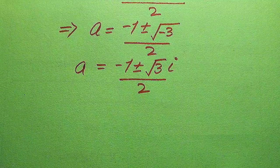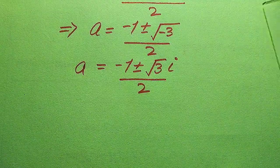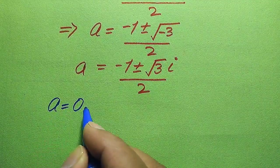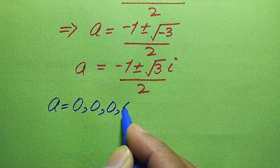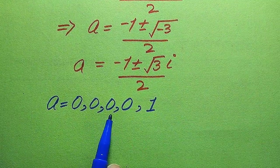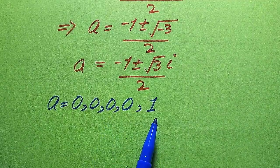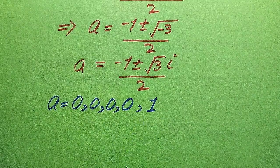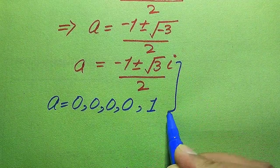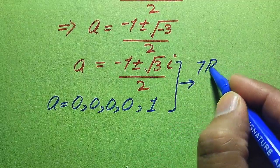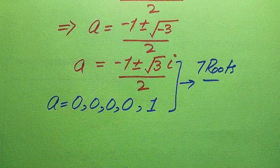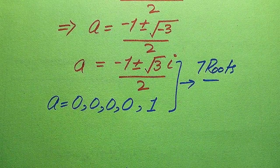These are the final two complex roots of the given equation. Finally, the seven roots of the given equation are: the first four roots are zero, which are equal or repeated roots; the fifth root is a equals 1, which is a distinct real root; and the remaining two roots are complex roots. So these are the total seven roots of the given equation. Thank you so much for watching this video — please subscribe to my channel for more exciting videos.